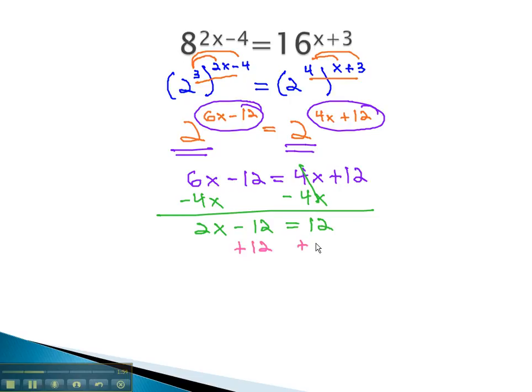Adding 12 to both sides gives us 2x equals 24. And finally, we divide both sides by 2 to find out x, in this exponential equation, is equal to 12.